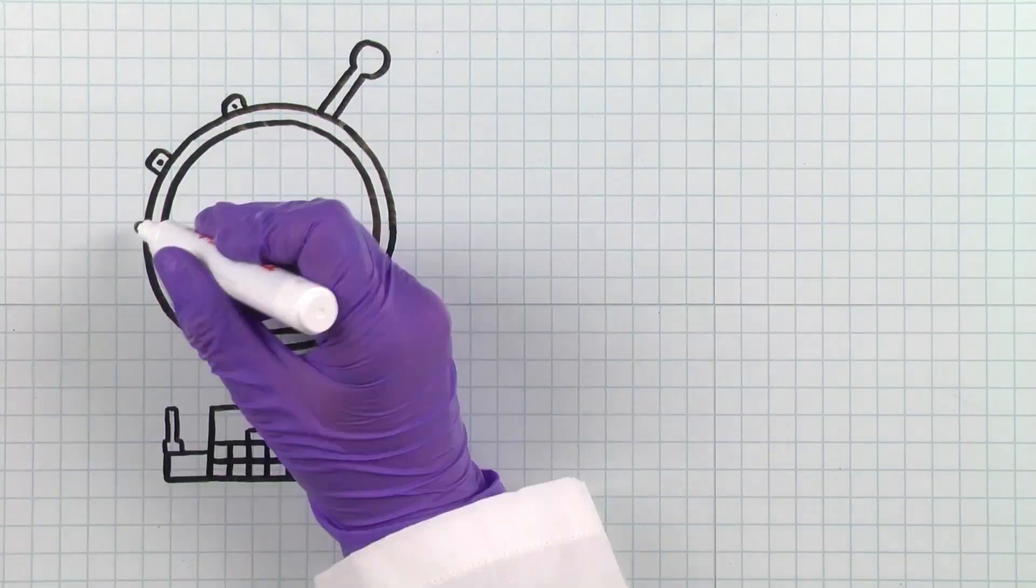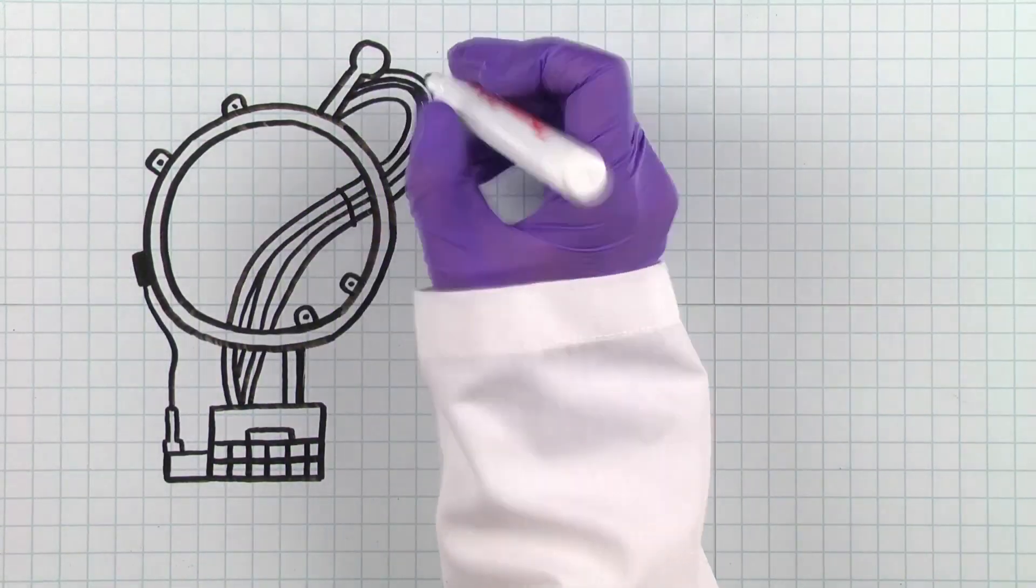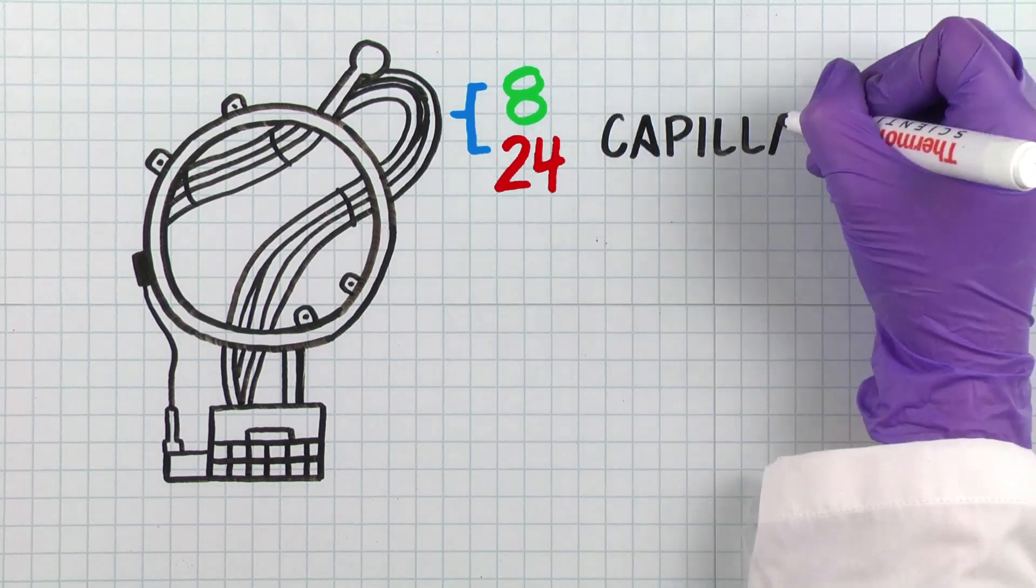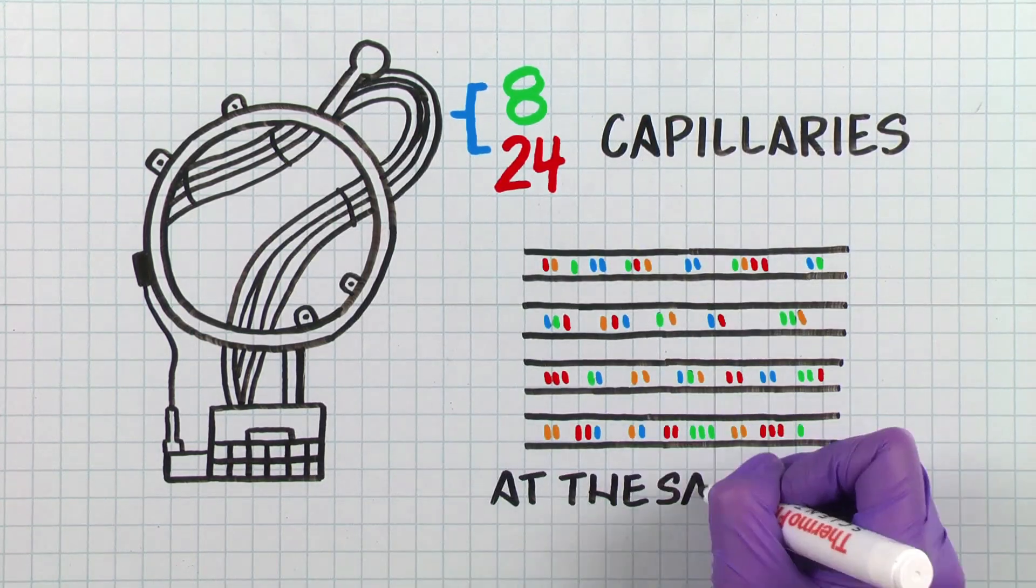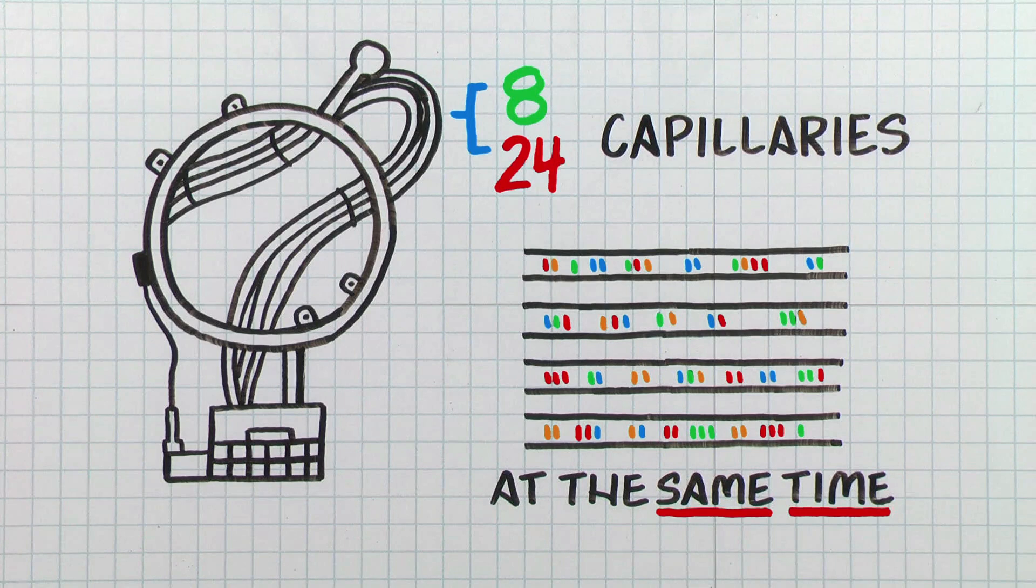Contrary to running one sample at a time sequentially, its capillary array consists of 8 and 24 capillaries, enabling all samples to run parallel to each other at the same time. These capillaries enable consistent results over long periods of time and across multiple capillaries.